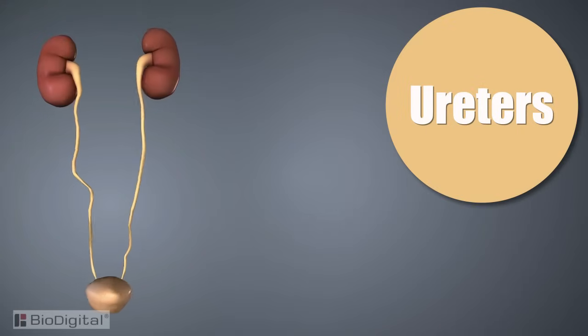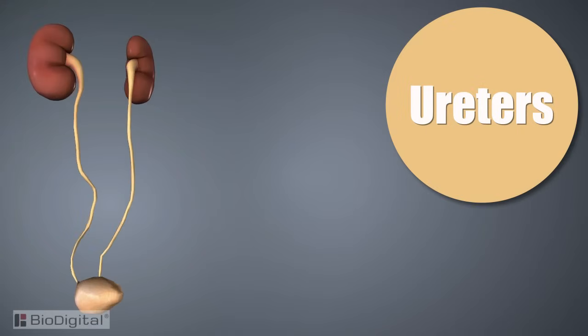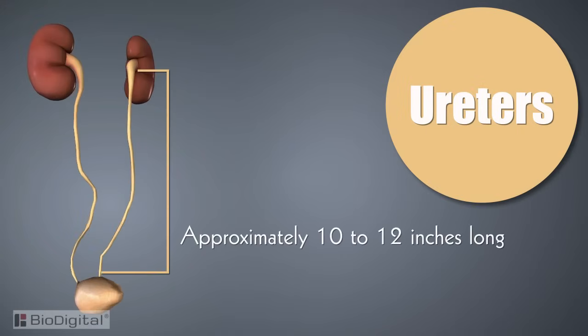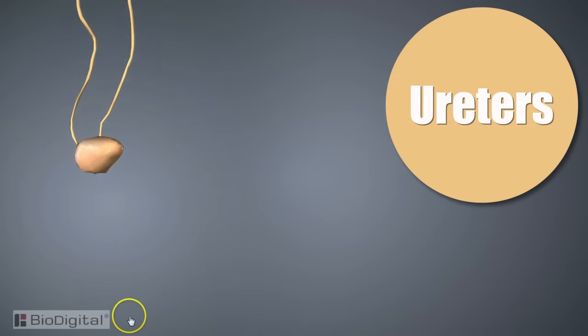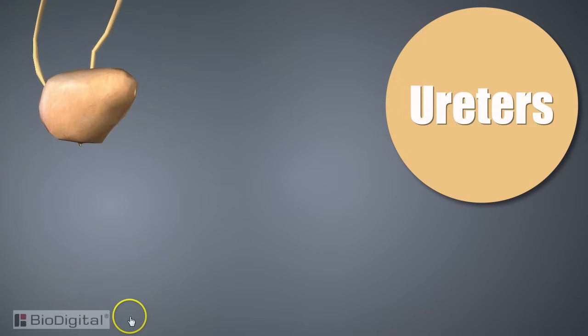The ureters are two muscular tubes approximately 10 to 12 inches long, extending from the renal pelvis of each kidney to the bladder.